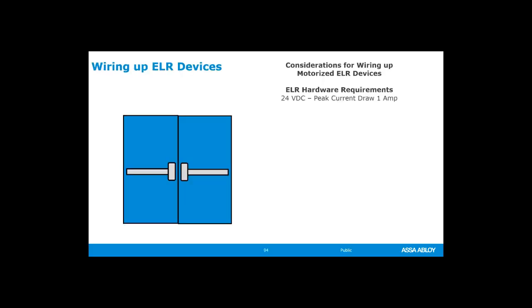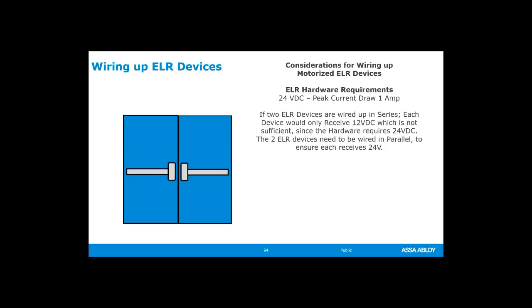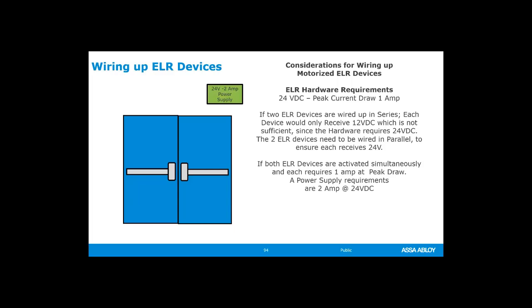Here's a true to life example. You're considering wiring up some motorized electric latch retraction devices. You have two ELR devices, each requiring 24 volts with a peak current draw of one amp. If the two ELR devices are wired up in series, each device will only receive 12 volts, which is not sufficient since the hardware requires 24 volts. The two ELR devices must be wired up in parallel to make sure they both receive 24 volts. If both ELR devices are activated simultaneously, each device requires one amp at peak current draw. The power supply required would be a 24-volt power supply at two amps. So the hardware must be wired in parallel to ensure that both devices receive 24 volts, and the two-amp power supply is sufficient for the two ELR devices to be activated at one time.